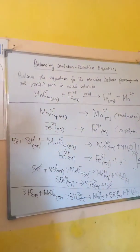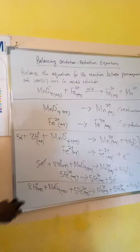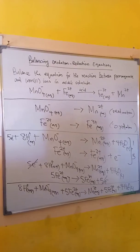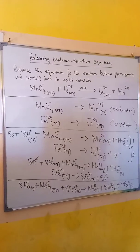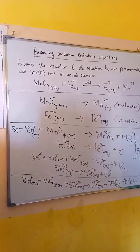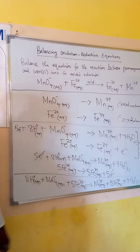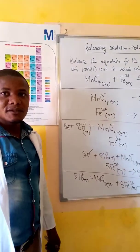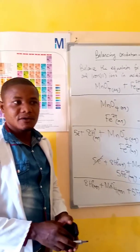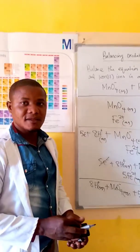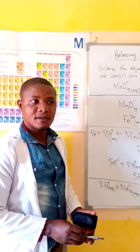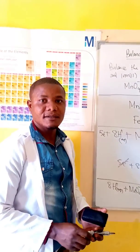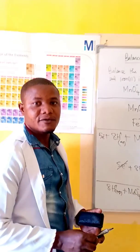This is how we balance a redox equation in acidic solution using the half-reaction method. In the next tutorial, we shall look at balancing redox equations in alkaline solution. Thanks for watching.